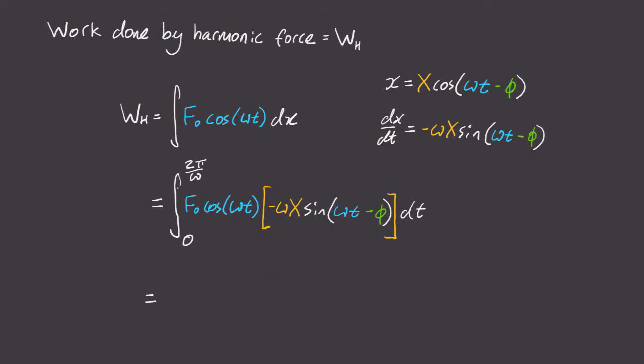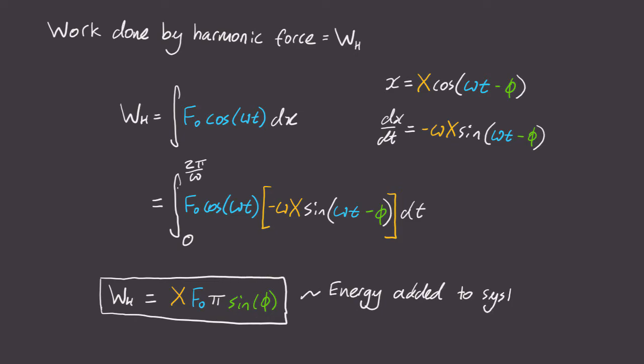Once you do the integration, you'll get the answer capital X F0 pi sine phi. And so what we've just found is the energy added to our spring mass damper system in a single cycle due to the excitation force.